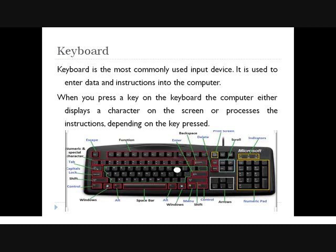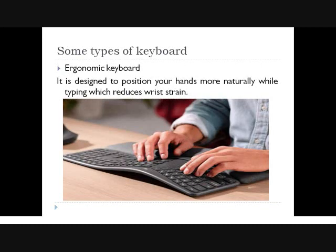On the keyboard there are alphabet keys A to Z, numeric keys 1 to 10 — we call it the numeric pad. There are also special keys such as Backspace, Delete, and Enter. There are function keys from F1 to F12. There are many different types of keyboards: wired keyboard, wireless keyboard, cordless keyboard, ergonomic keyboard, and gaming keyboard.